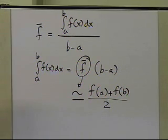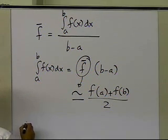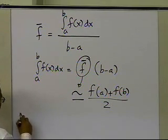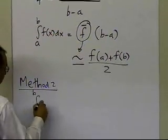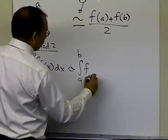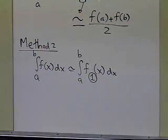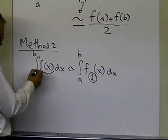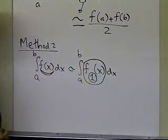You can also derive the trapezoidal rule formula using calculus. I showed you a geometrical method of deriving the trapezoidal rule — now let's see how we can derive it using calculus. Let me call this Method 2. Basically we have the integral from a to b of f(x) dx, and what we are approximating it by is a straight line, which I will call f₁(x), where the subscript 1 stands for first-order polynomial. Trapezoidal rule can be viewed as approximating the value of the function by another function whose integral you know how to find.